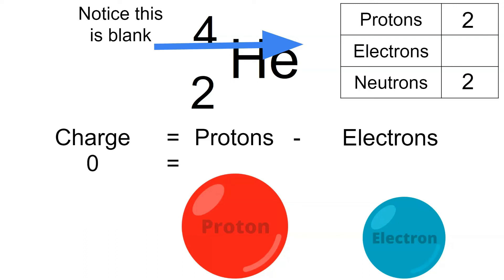Zero is equal to how many protons? We have two. So let's think about this. What number can I subtract from two that will give me zero? And the answer is two.